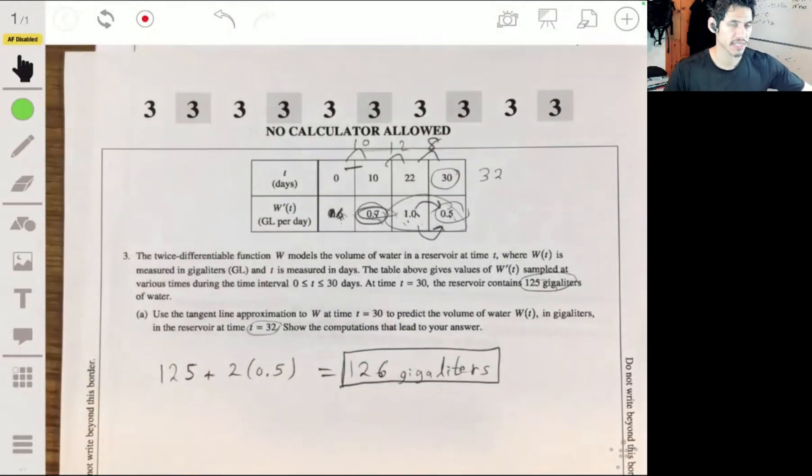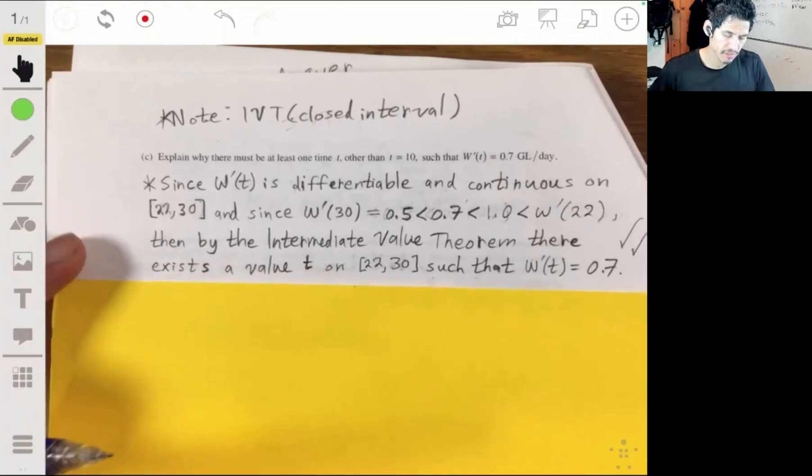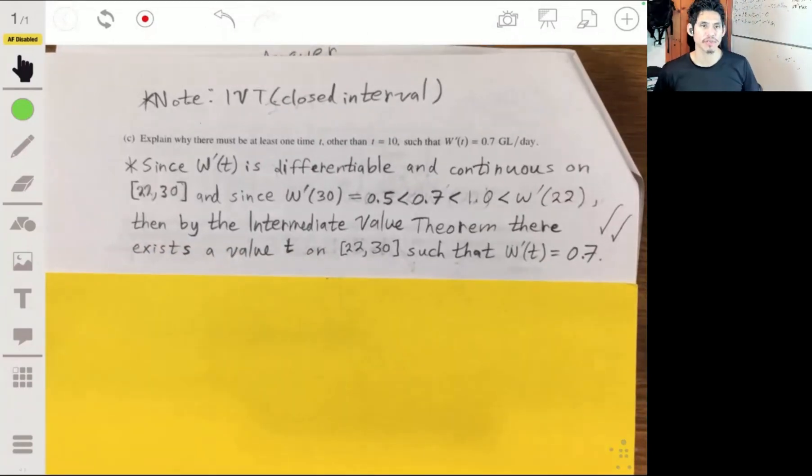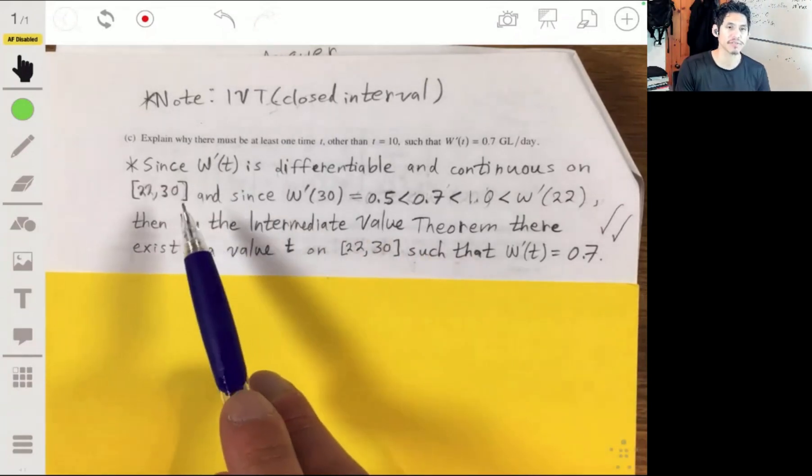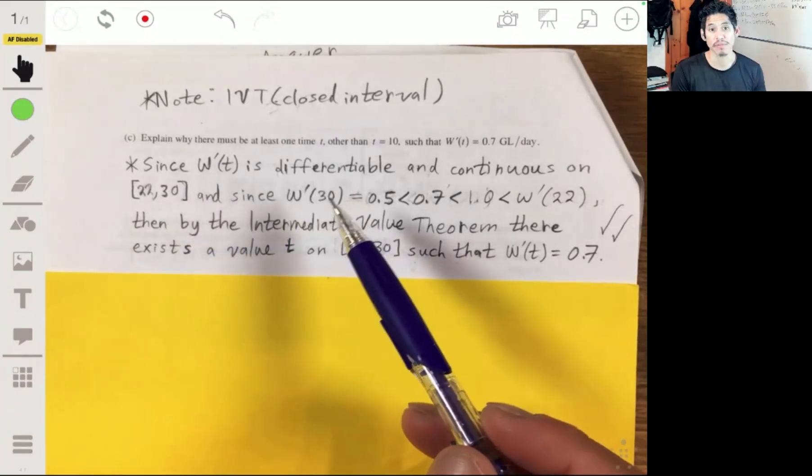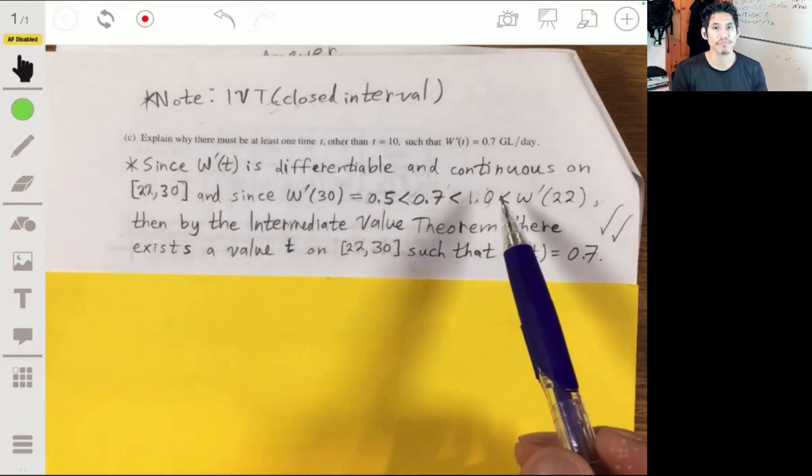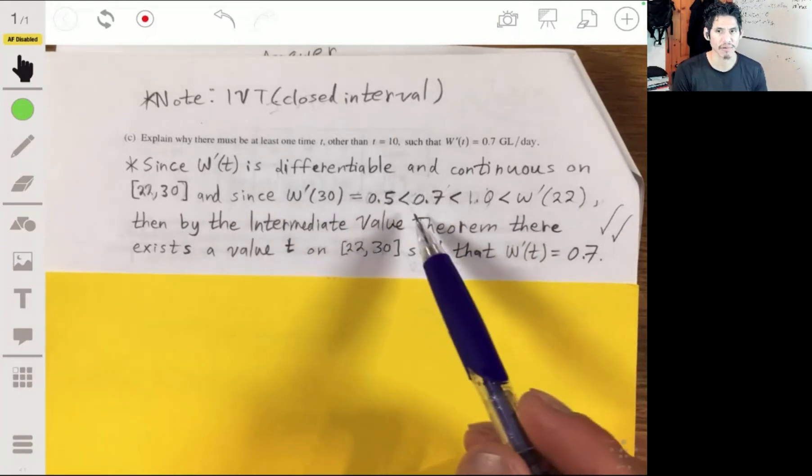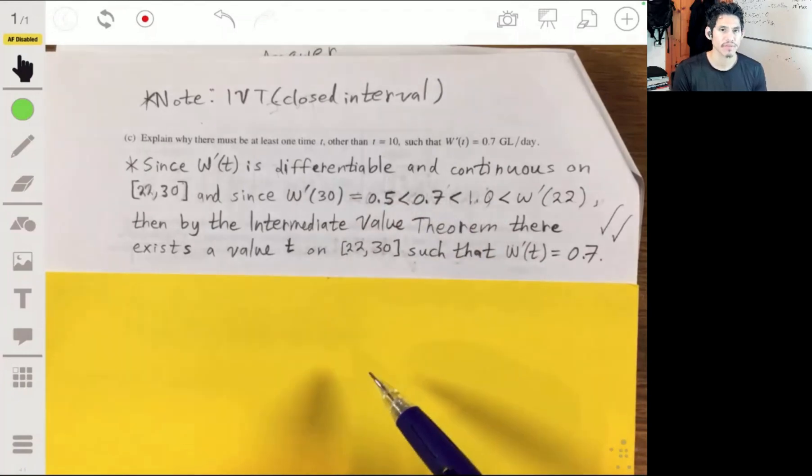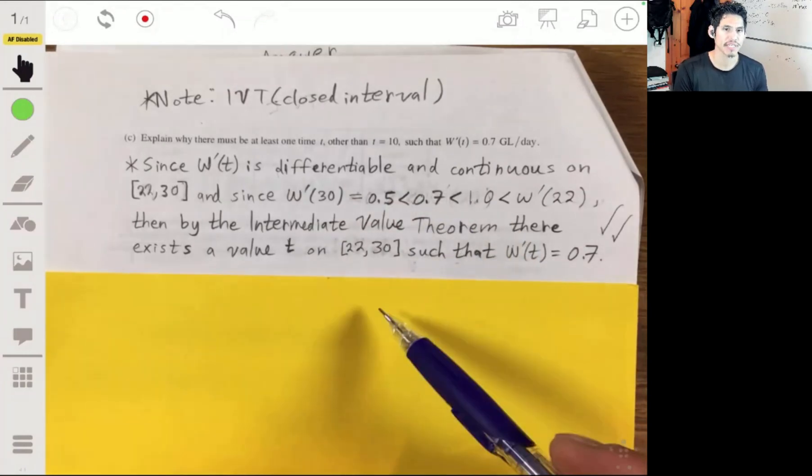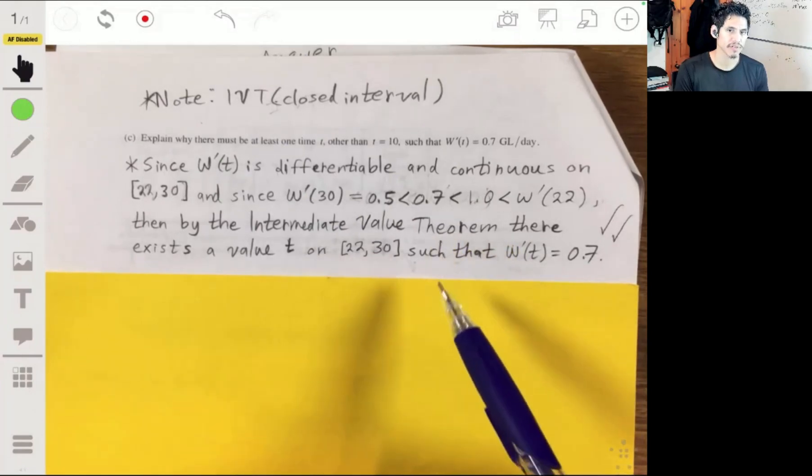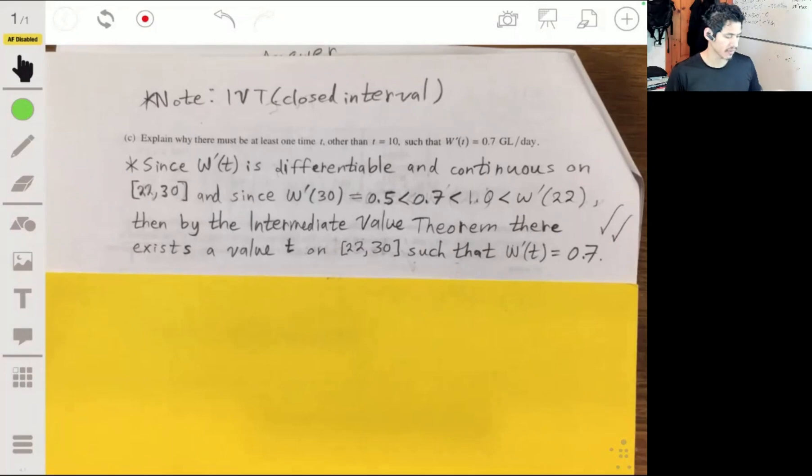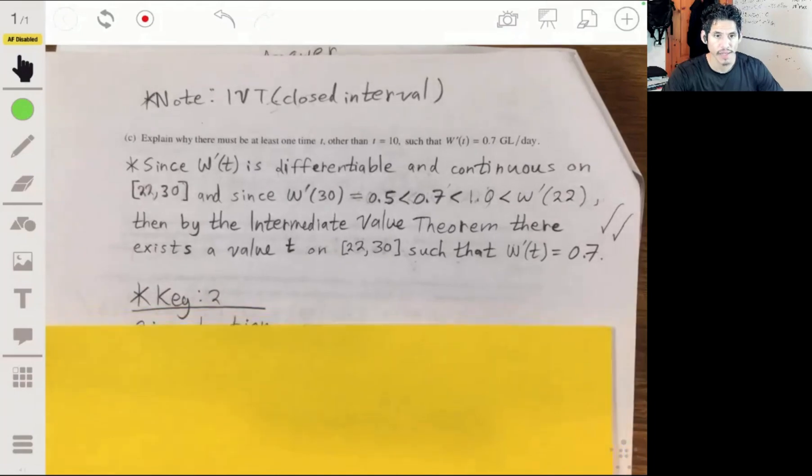So, let me just show you my written answer. Here's what I put when I wrote it out formally. Since w prime of t is differentiable and continuous on this closed interval 22 to 30, and since w prime of 30 is 0.5, which is less than 0.7, which is less than w prime of 22, which is 1.0, by the Intermediate Value Theorem, there has to be a value on the interval 22 to 30 such that w prime of t is 0.7. Make sure you know this, because there's usually always at least one question based on that. Look over the Intermediate Value Theorem for sure. That's a two-point question.